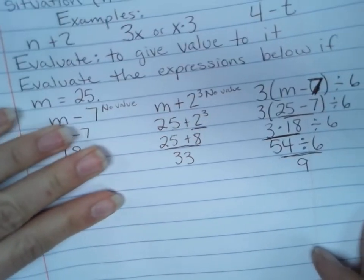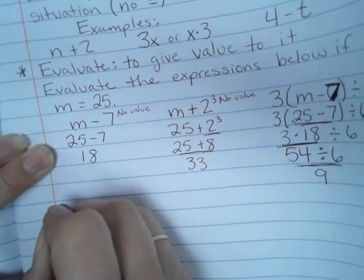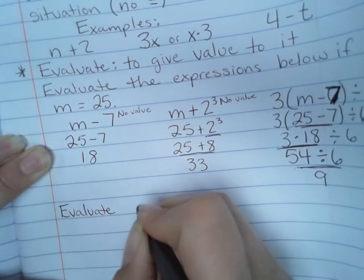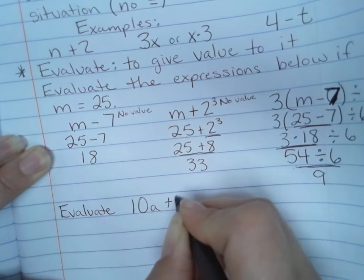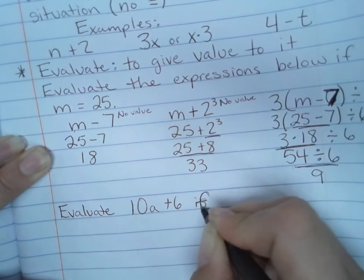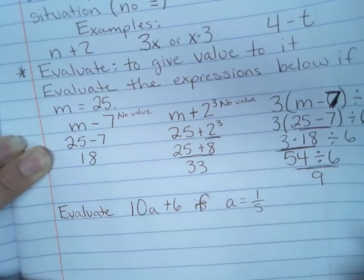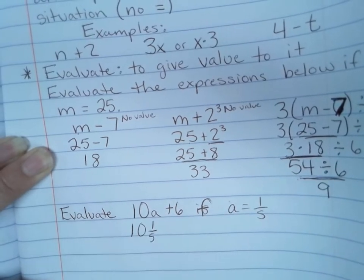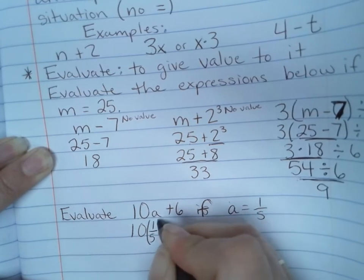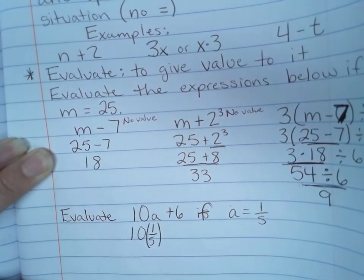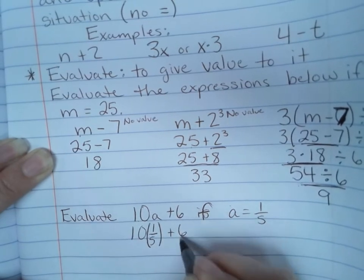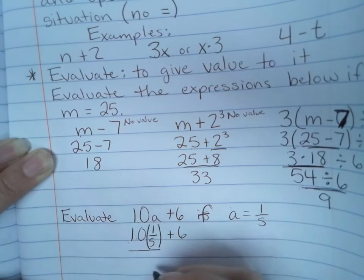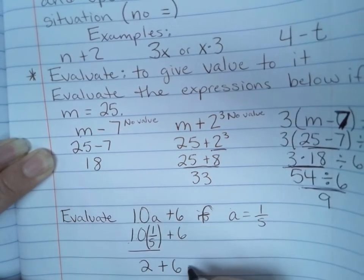Realize that they're not always just going to be whole numbers. Sometimes you have fractions and decimals. Evaluate 10a plus 6 if a equals 1 fifth. I'm going to plug that in. Is it going to be 10 and 1 fifth? No. This means 10 times this number. So this is 10 times 1 fifth. Don't get fooled with that. 10 times 1 fifth plus 6. Order of operations says I have to do my multiplication first. So 1 fifth of 10 is 2 and then 2 plus 6 would be 8.